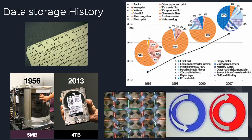On the bottom left, we have the first random access method of accounting and control, created by IBM. This device had 50 disks that were 24 inches each, and the total weight of the device was actually an entire ton. It could only record about 5 megabytes of information.